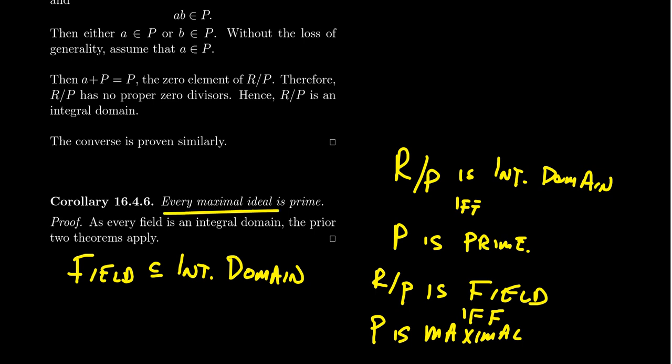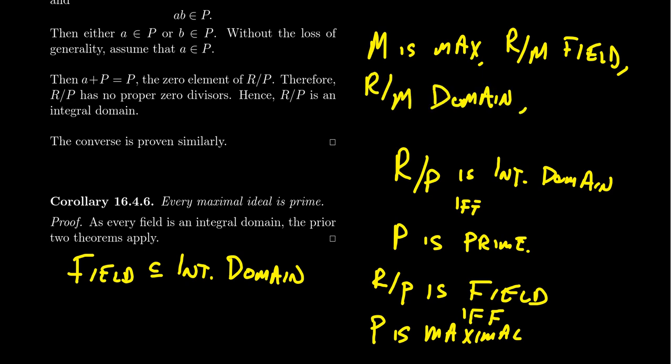All right, every maximal ideal is a prime ideal because you start off with a maximal ideal. So M is a maximal ideal. So that's step one. So then you mod out by M, you get a field. You then infer that because it's a field, it's going to be an integral domain. And then because it's an integral domain, that means M is prime.